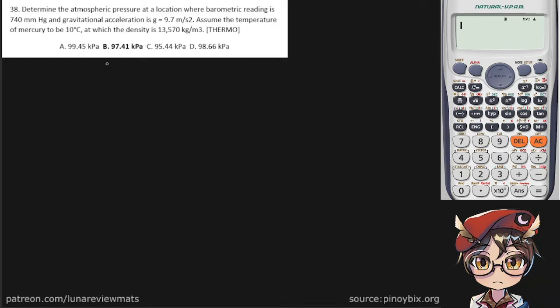Okay, so what do we have here? Well, we're given the height of a column of mercury, 740 millimeters, which we can convert into meters. That's simply 0.74 meters of mercury. And then we're given the gravitational acceleration, 9.7 meters per square second, and we're also given a density—that's the density of our mercury in kilograms per cubic meter.